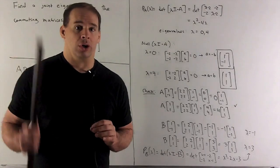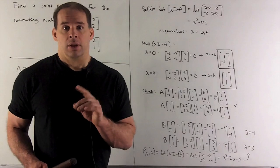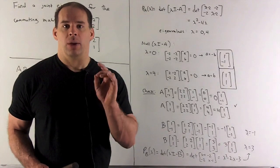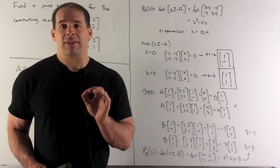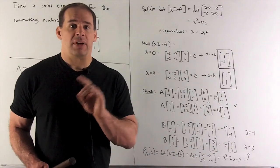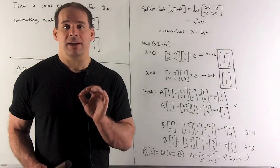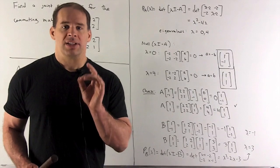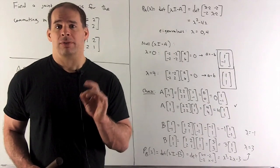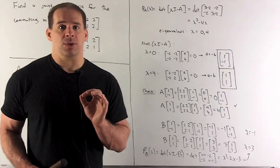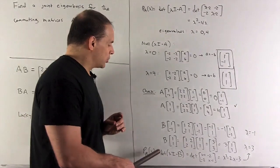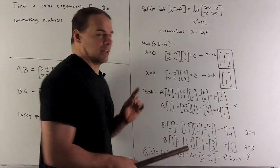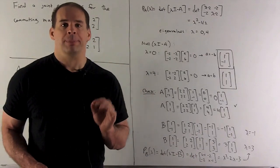Now we have a joint eigenbasis: [1, 1] and [1, -1] are eigenvectors for both A and B. They have different eigenvalues for each matrix, but as eigenvectors they work at the same time. Computing the characteristic polynomial for B — determinant of lambda I minus B — confirms the roots are lambda equals minus 1 and 3, as promised.